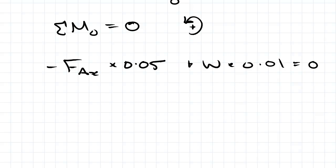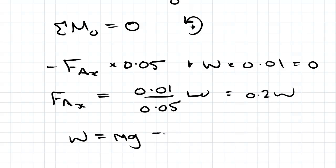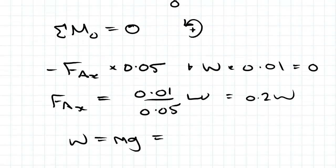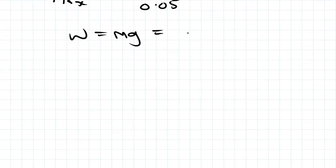So rearranging for F_Ax, we have that equal to 0.01 divided by 0.05 times W, which is 0.2W. W equals mg, so the mass we were given in the question was one kilogram, so that will be one times 9.81, that's 9.81 newtons.